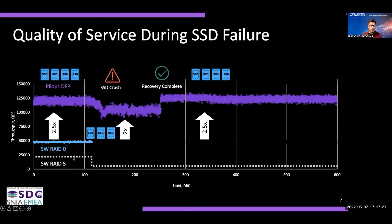With software RAID 0, performance jumped from 25,000 to 50,000 queries per second — almost a 2x gain. However, when we simulated pulling an SSD from the RAID 5 group and creating a crash, performance dropped from 25,000 to 5,000 queries per second — almost a 5x drop. Software RAID 0 has no data protection, so we couldn't create an SSD crash. With PliOps drive fail protection enabled, sustained performance was around 125,000 queries per second.